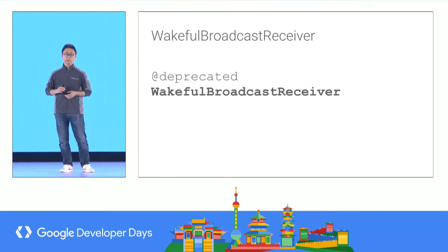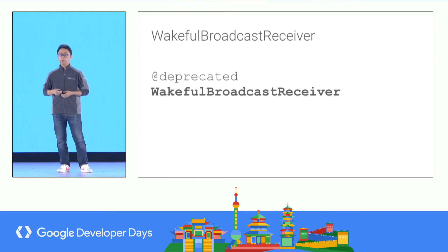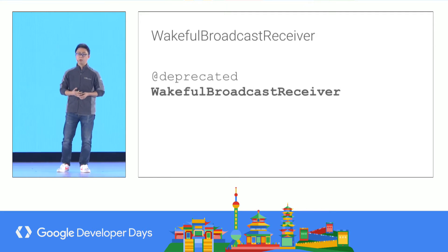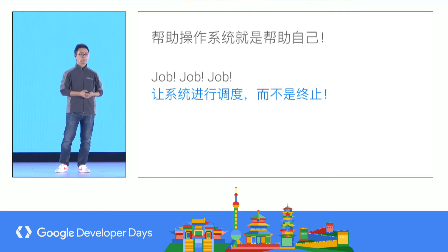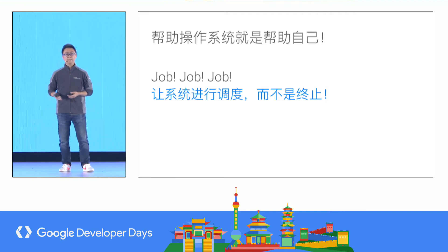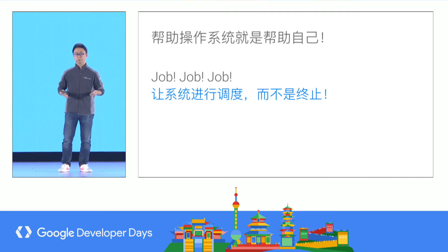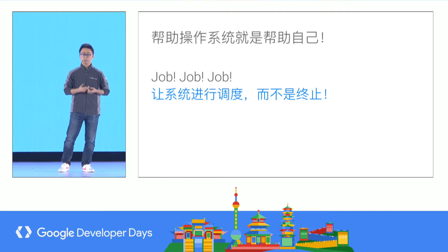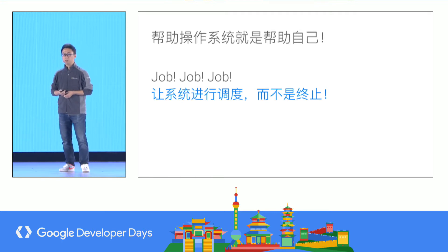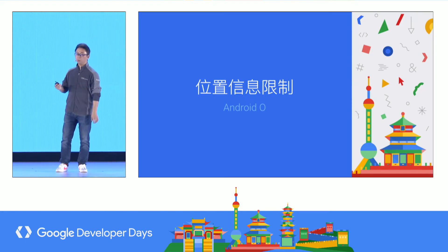JobIntentService understands the background limits. When trying to use a WakefulBroadcastReceiver, it is not safe to start a service from within a broadcast receiver if not in the foreground. Instead, you need to use JobScheduler to schedule a job. This does not require the app to hold a wake lock while doing so — the system will take care of holding the wake lock for the job. Previously, when an implicit broadcast was sent, many services would try to grab resources and the system would have to kill them. But now, with JobScheduler, the system can schedule intelligently, which reduces jank.